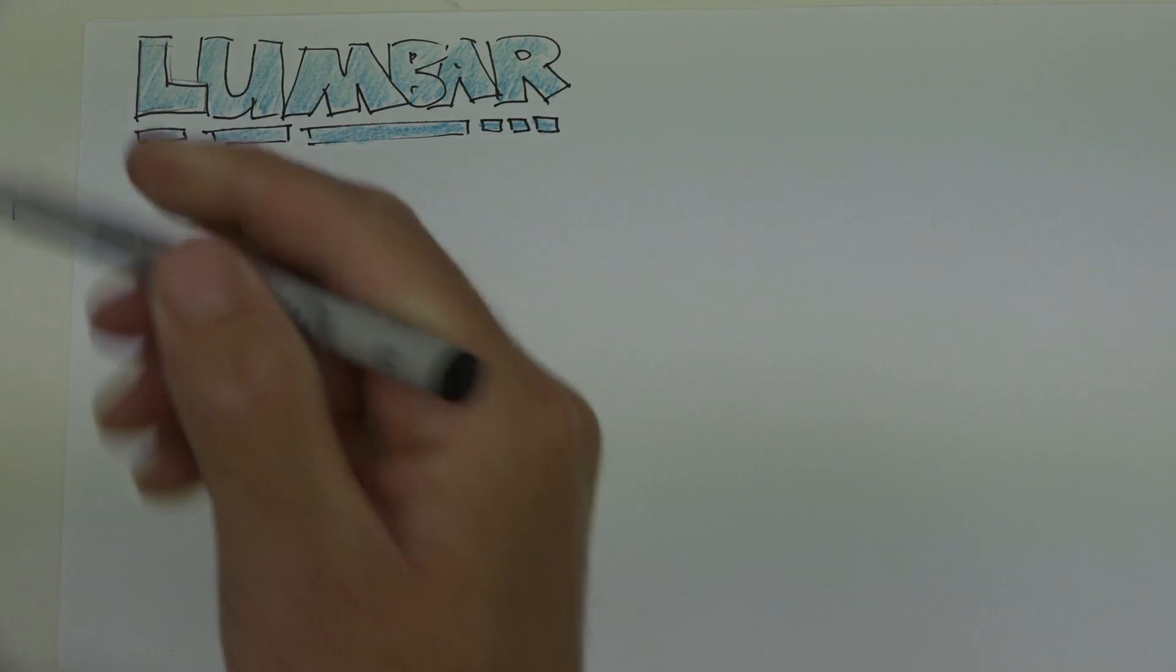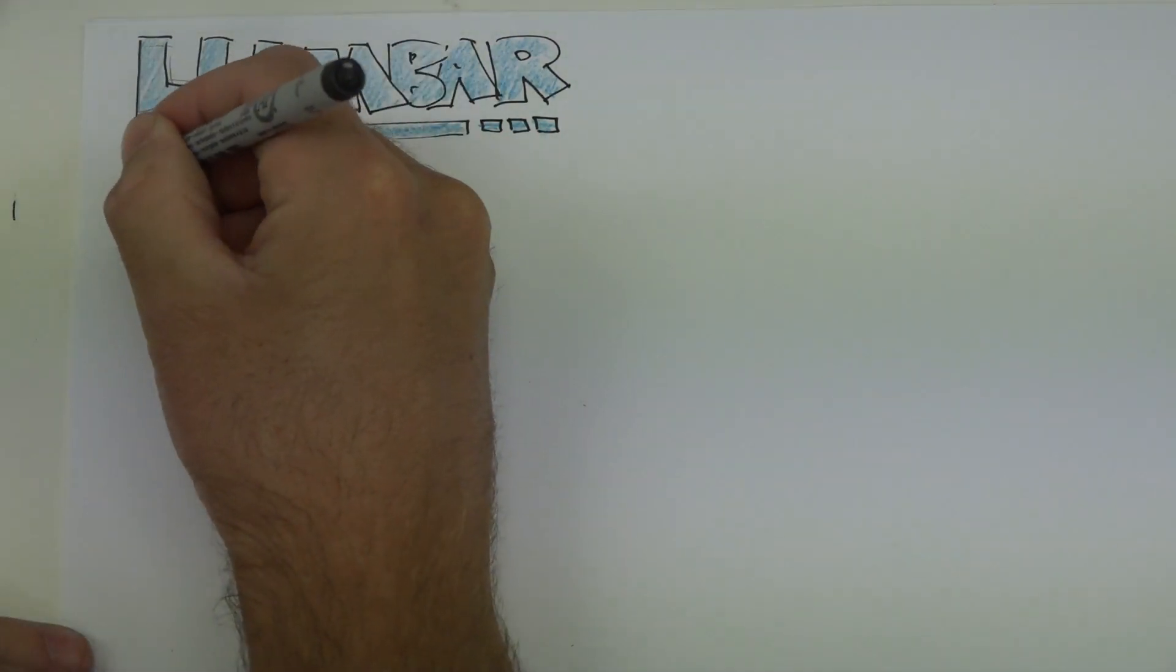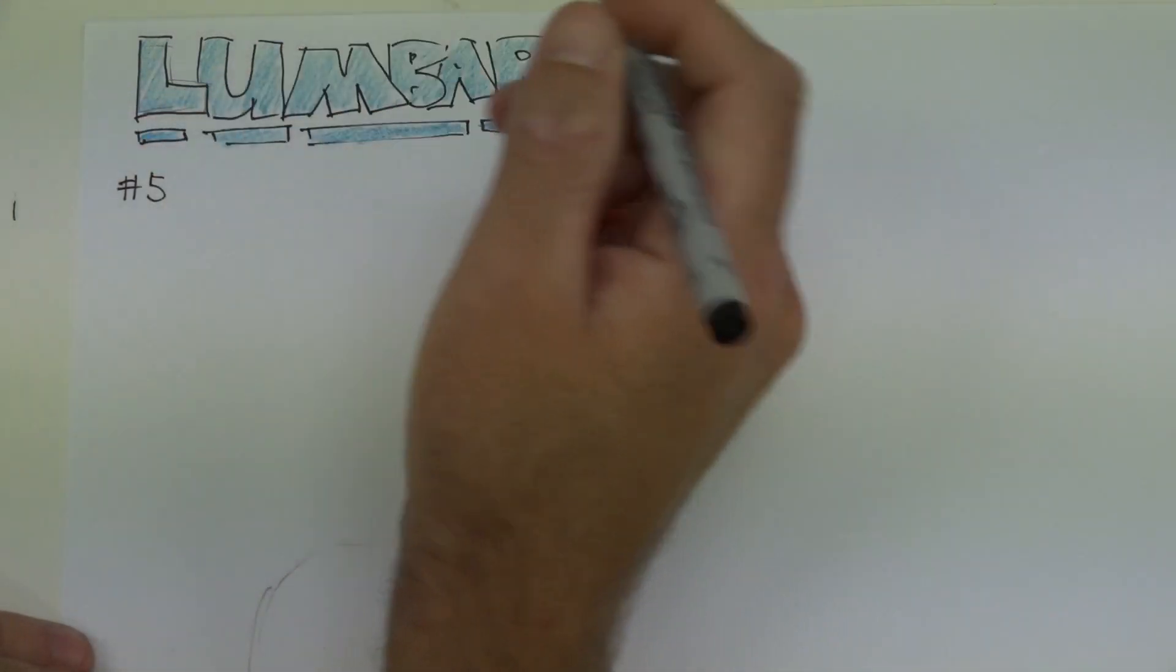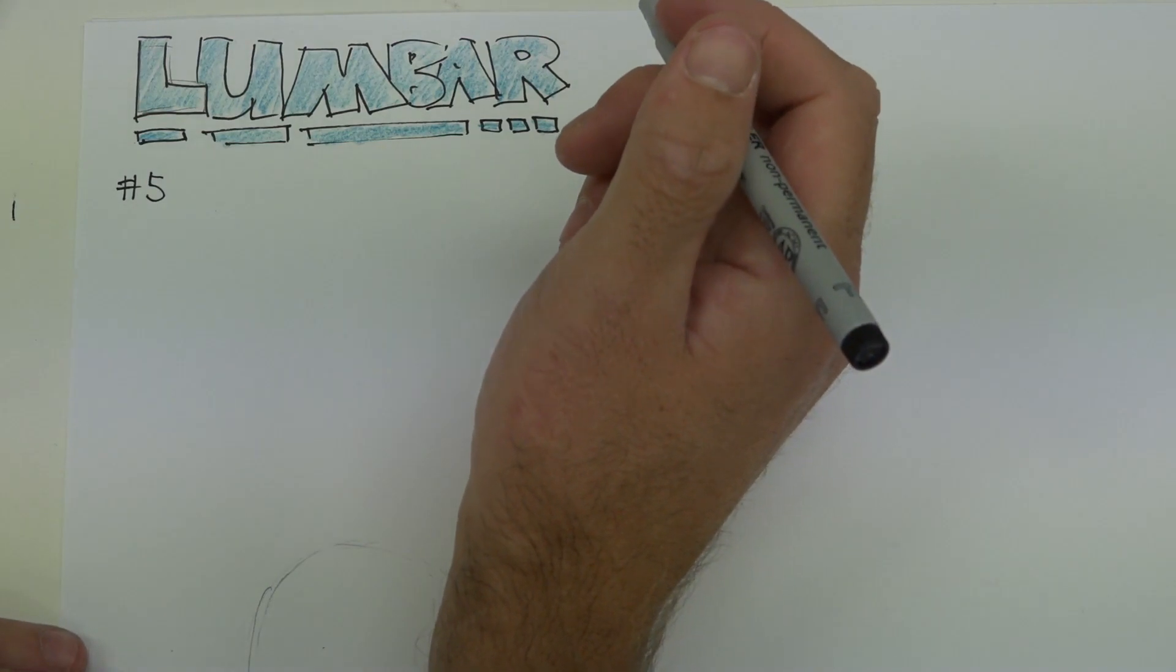Welcome back to Part 3 on the Vertebral Column. So now we're talking about our lumbar vertebrae. There are five of these lumbar vertebrae, and they're the largest in the pre-sacral group.